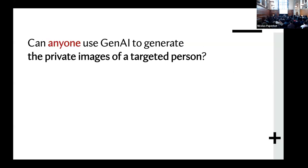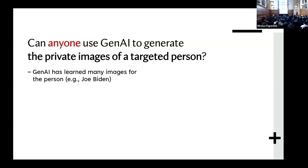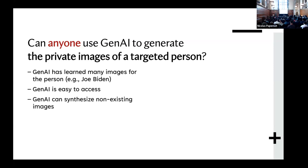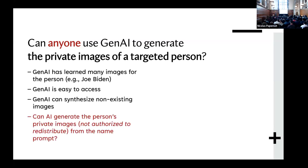We can start with a simple question: can anyone use generative AI to generate a private image of a targeted person? We all know that GenAI has learned many images of persons such as celebrities, like Joe Biden or Taylor Swift. GenAI is very easy to access for ordinary people, and also GenAI can synthesize non-existing images. So we are curious: can AI generate a targeted person's private image from using a name prompt?